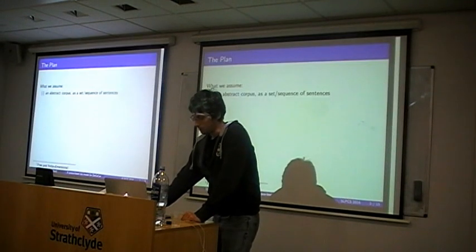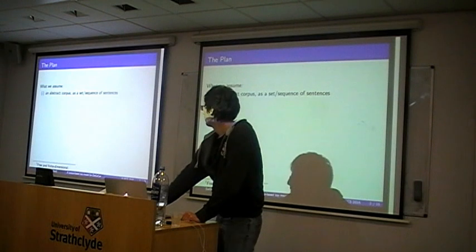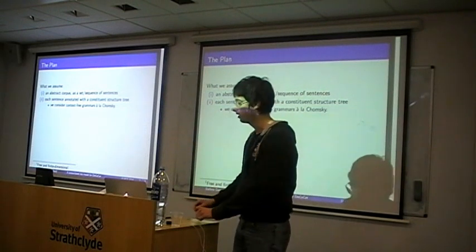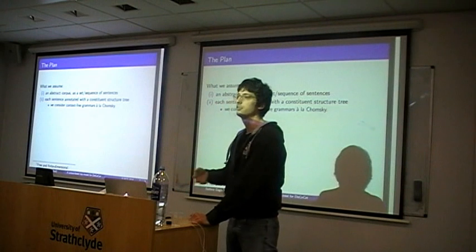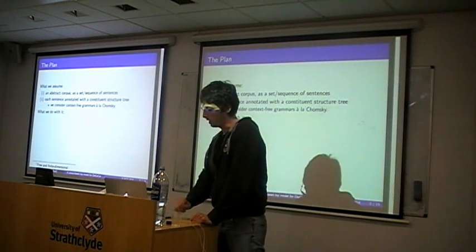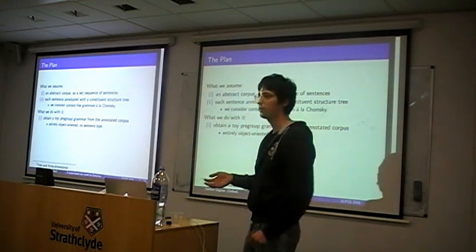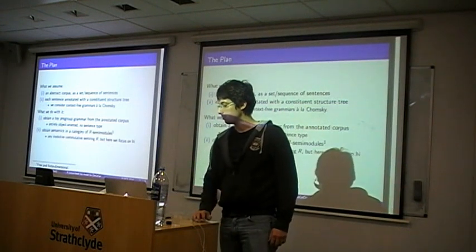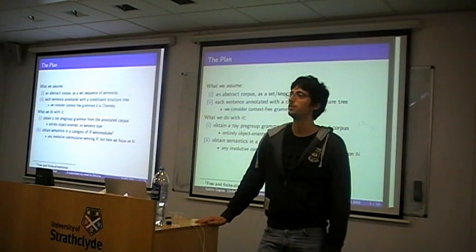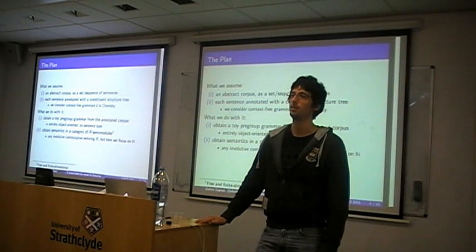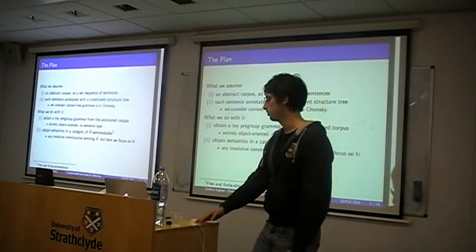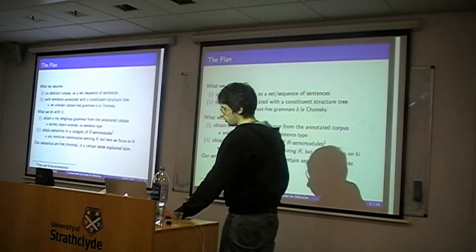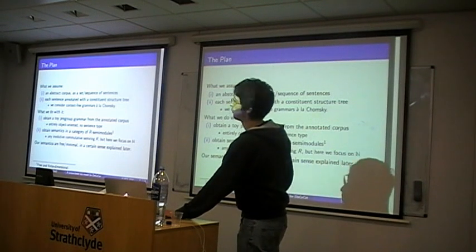The plan is: we take some abstract corpus modeled as a set of sentences, and assume each sentence is annotated with a constituent structure tree that gives you the grammar. There's no ambiguity at the level of words and sentences because they're tagged. We want to first obtain a pregroup grammar from a simplified version of that sigma map, then obtain semantics in a category of semi-modules over some semi-ring. Semi-rings give more generality without losing anything — in a certain sense, these semantics are free or minimal.